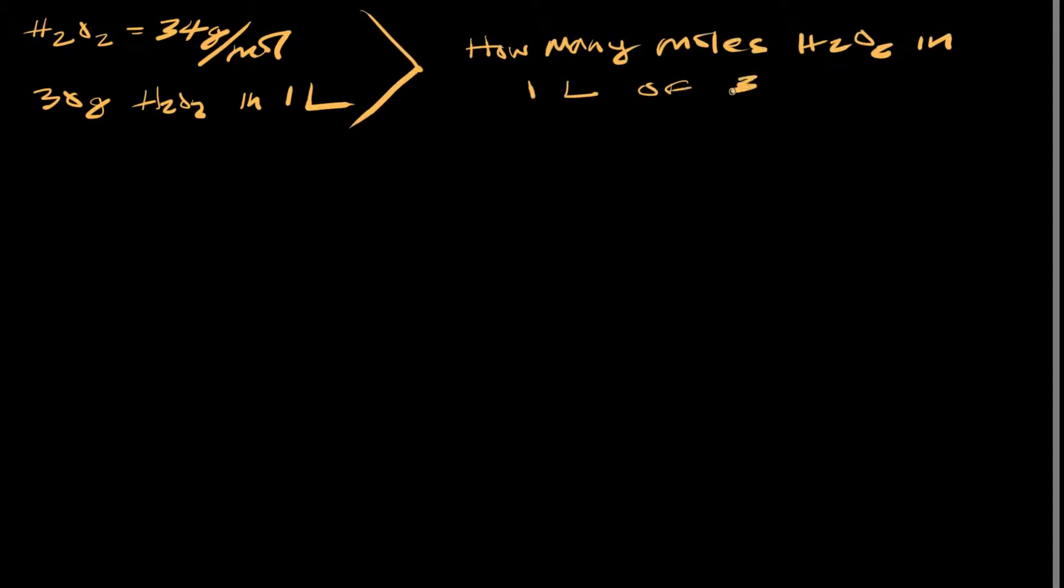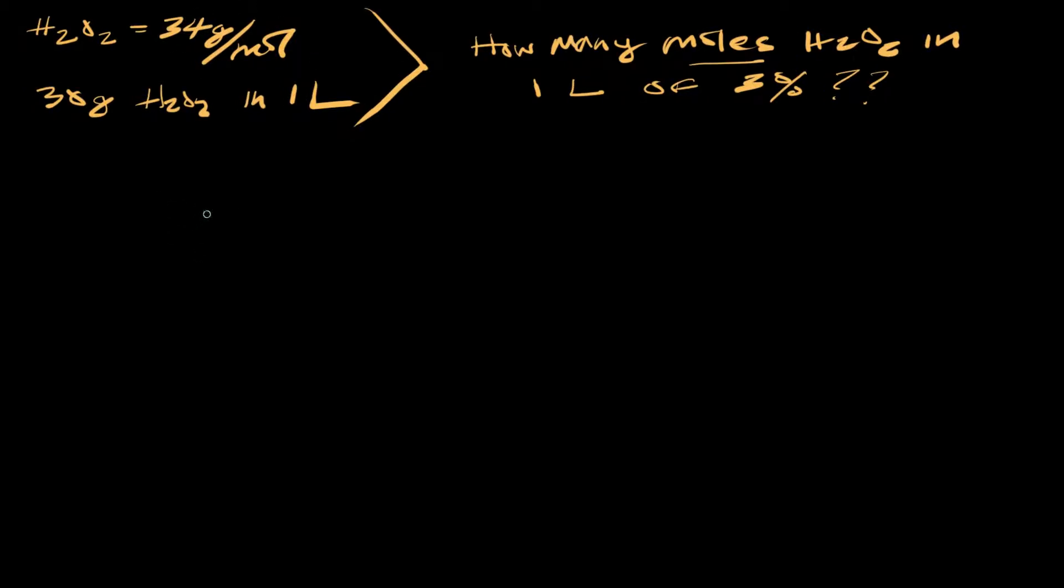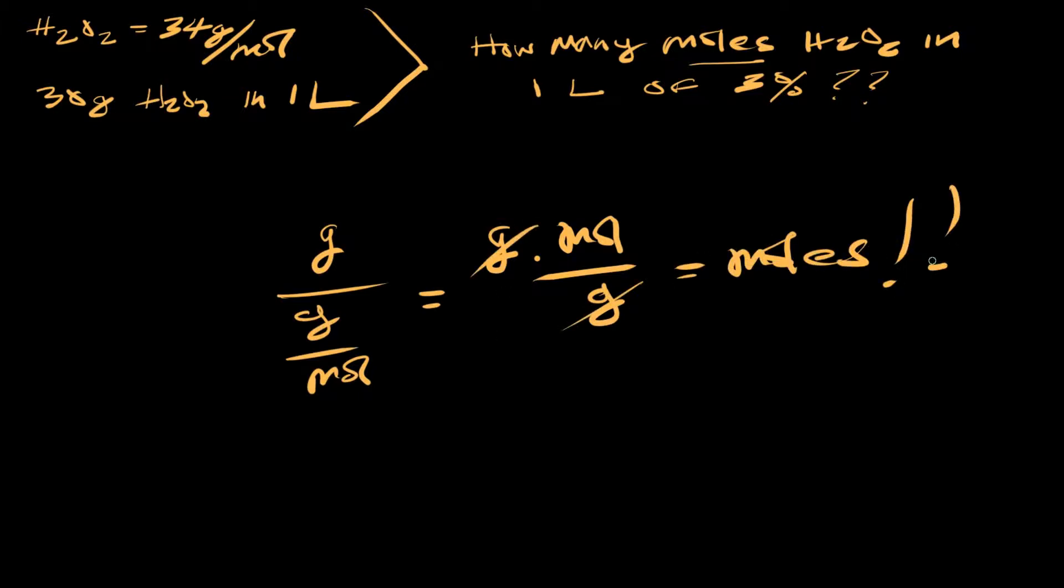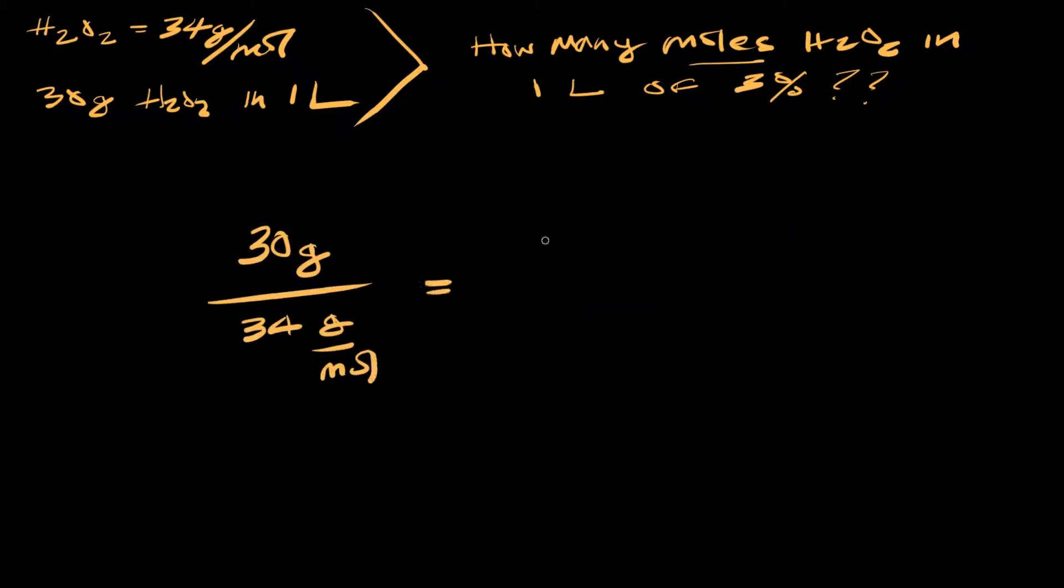Now here's the beauty thing: even if you knew absolutely nothing about chemistry, you could still solve this problem and get the right answer, and that's because you know the final answer has to be in moles. Remember, anything you do to the numbers you have to do to the units. Let's just ignore the numbers for a second and just play with the units. If we divide grams by grams per mole, the grams cancel and you're left with moles on the top. And because the units are right, you know your answer's right. Plugging in the numbers we get 0.88 moles of hydrogen peroxide in 30 grams.